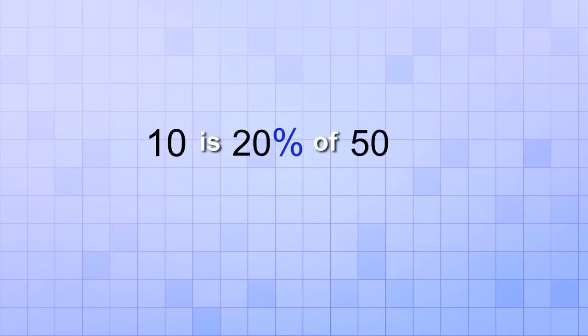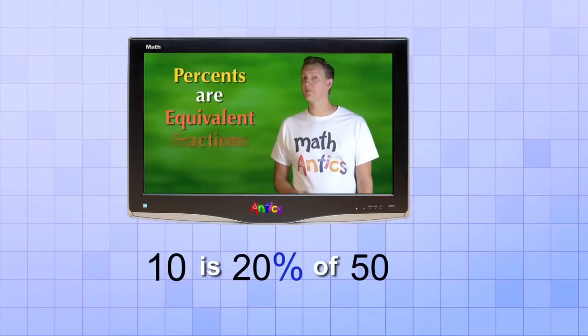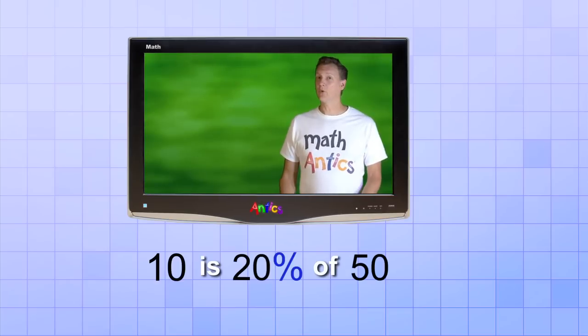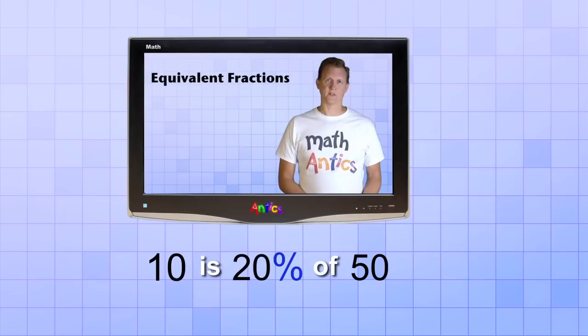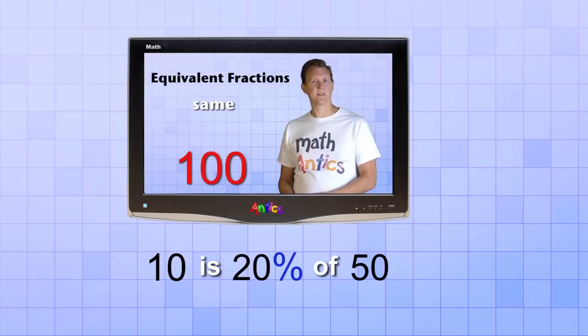To see what I mean, think back to our video about percents and equivalent fractions. In that video, we learned that a percent is really an equivalent fraction that has 100 as the bottom number. So we could rewrite our statement like this. 10 over 50 equals 20 over 100.